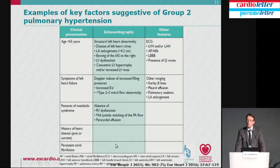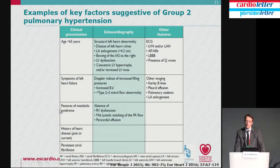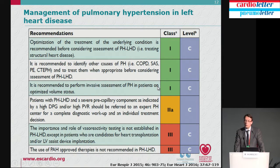A few words on Groups 2, 3, and 4. Group 2 is common. The clinical presentation evocative of Group 2 PH includes advanced age, symptoms of left heart failure, features of metabolic syndrome, history of heart disease, and persistent atrial fibrillation. Echo will show a large left atrium and left ventricular dysfunction. What is really important: Group 2 PH is not the kingdom of PAH therapy. The use of PH-approved therapies is not recommended for PH due to left heart disease.